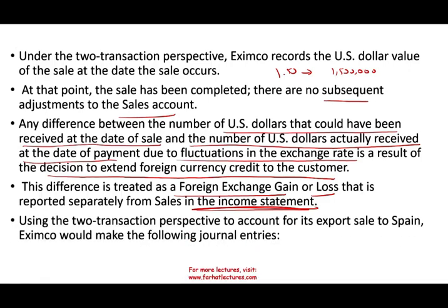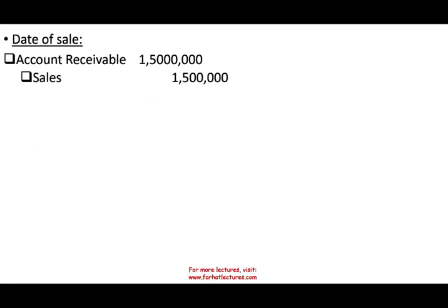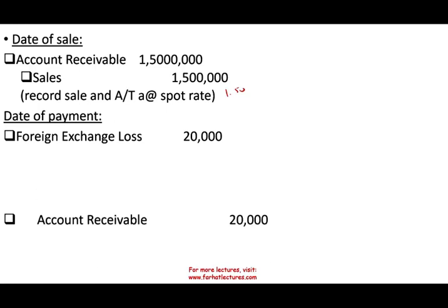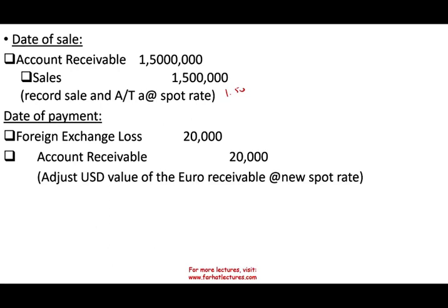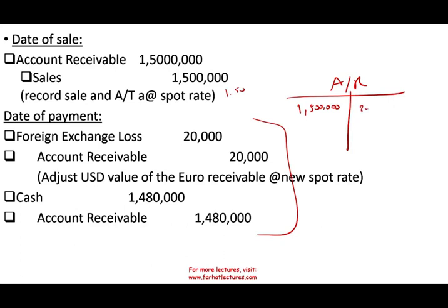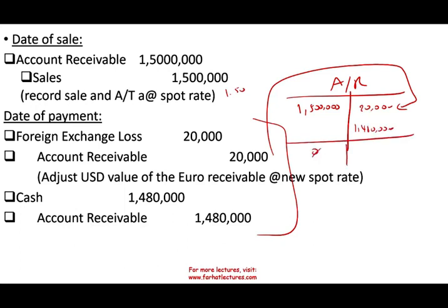Using the two transaction perspective, let's look at the journal entries. On the date of the sale, we record the sale at the spot rate of $1.50, giving us sales of $1,500,000. On the date of payment, we debit foreign currency loss $20,000 and credit the receivable $20,000 to adjust it to the new spot rate, then we receive the cash. The AR started at $1,500,000, was reduced by $20,000, then we received $1,480,000, and the receivable goes down to zero.